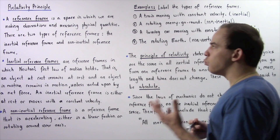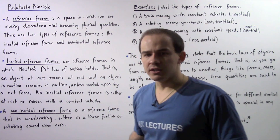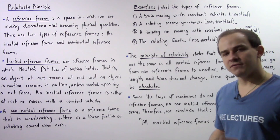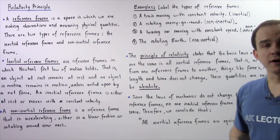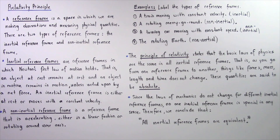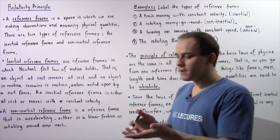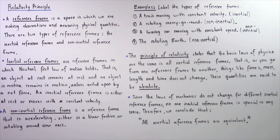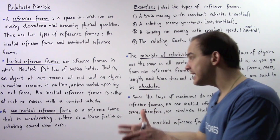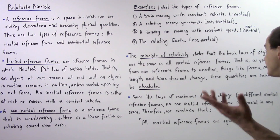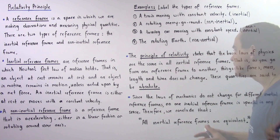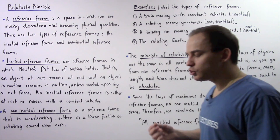Now that we've defined reference frames, let's discuss the relativity principle as discussed by Newton and Galileo. The principle of relativity states that the basic laws of physics are the same in all inertial reference frames — for example, Newton's first, second, and third laws of motion. This means that as you go from one inertial reference frame to another, quantities such as forces, mass, acceleration, length, and time all remain constant. These are known as absolute quantities.